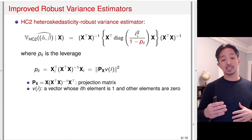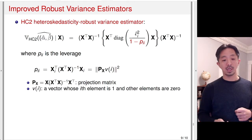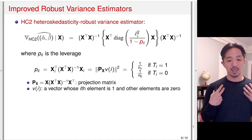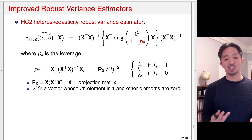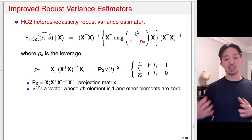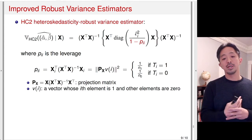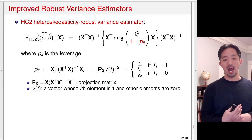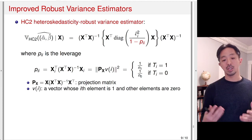When the treatment is the only variable and it's binary, the leverage has a simple form: 1/N_1 for treated units and 1/N_0 for control units. This makes sense because all observations within the treatment group have the same leverage (since T is the only variable), and all observations in the control group also share the same leverage. The leverage is inversely proportional to group size — larger group size means smaller leverage.